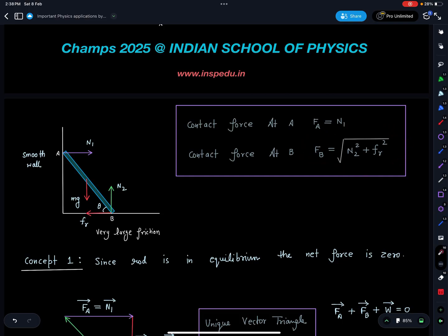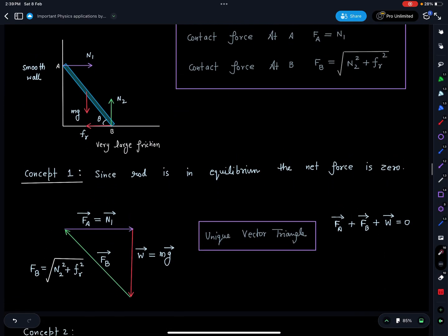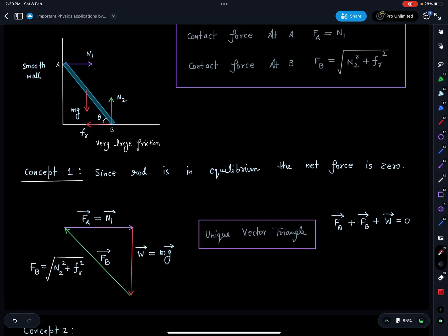Now the first part which you should realize is since rod is in equilibrium, the net force on the rod is going to be zero. I'll take these two components as one resultant, so it will give you a unique vector triangle. On INSP YT you can find a lot of problems on vector triangle, they are a very good tool you can use.